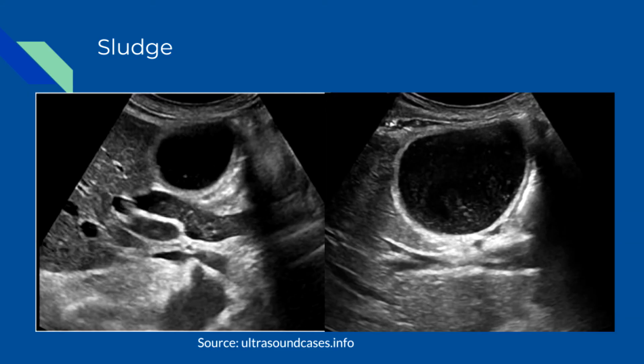On ultrasound, you'll see low-level echoes to echogenic debris that layers in the dependent part of the gallbladder and is mobile with patient position.